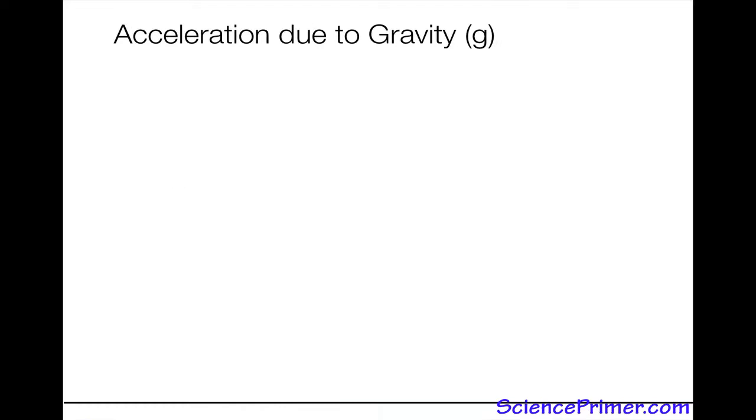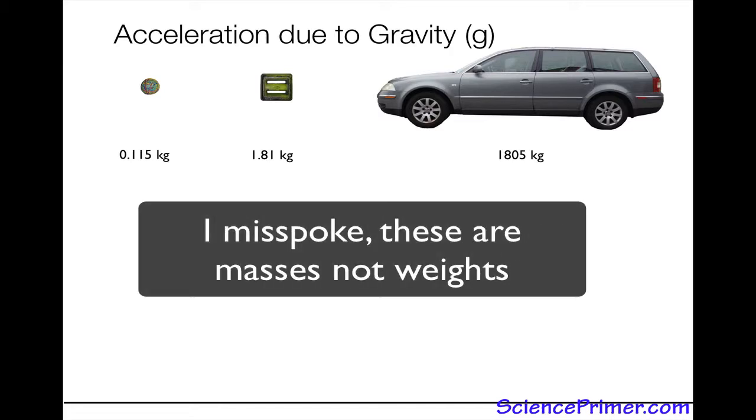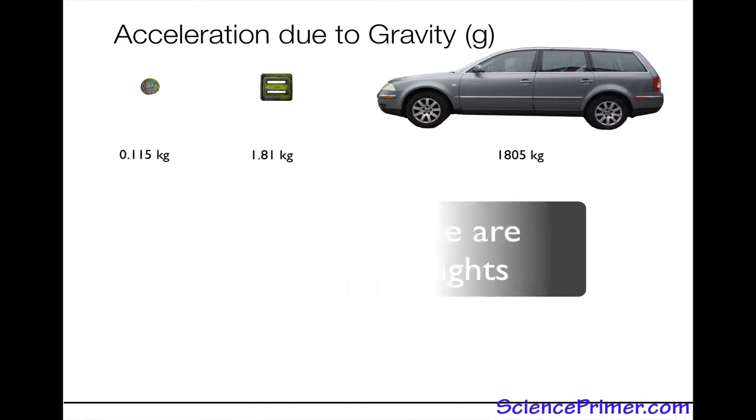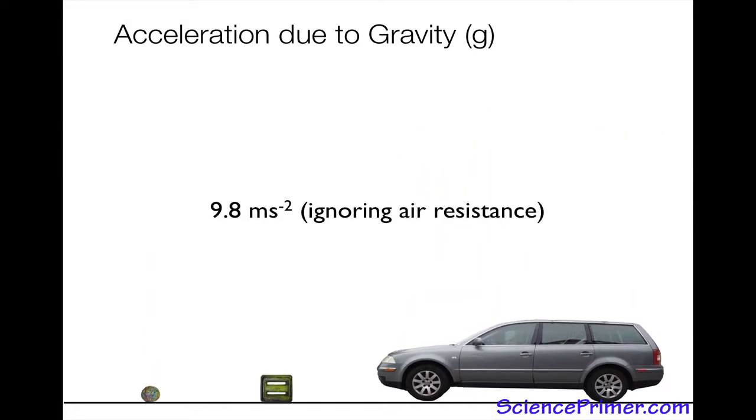So the implications of acceleration due to gravity being constant means that you can take different objects, all with different masses, so they all have different weights - in this case something weighing much less than a kilogram, something that weighs on the order of 2 kilograms, and something that weighs almost 2,000 kilograms. And were we to drop all three of them, they would fall at the same rate. They would all accelerate at 9.8 meters per second squared. This is, of course, ignoring other forces, most notably air resistance.